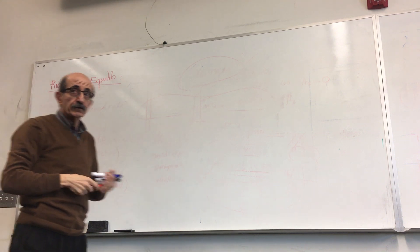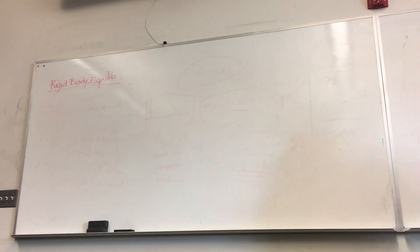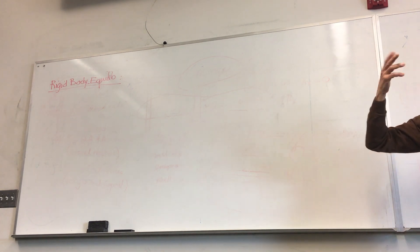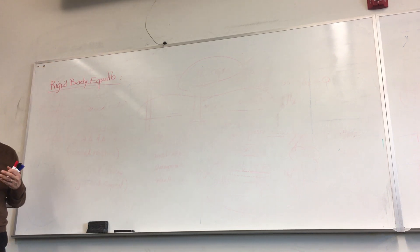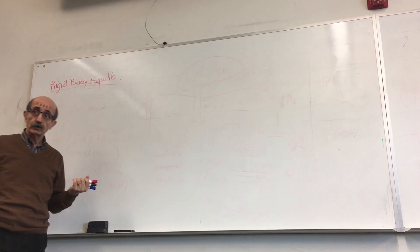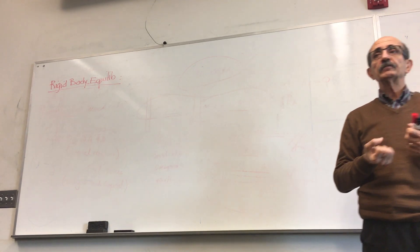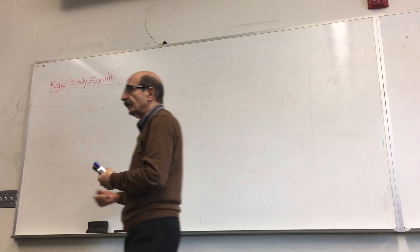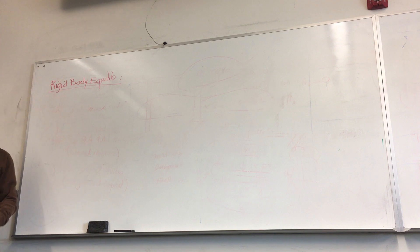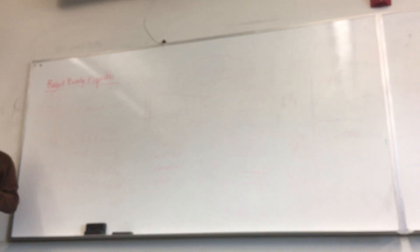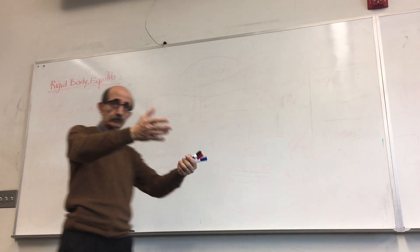A rigid body is any structure that you can find anywhere around yourself or in nature. Any rigid body or structure is supported externally through some mechanism that holds the structure in place, and the structure is not moving — it is in equilibrium.